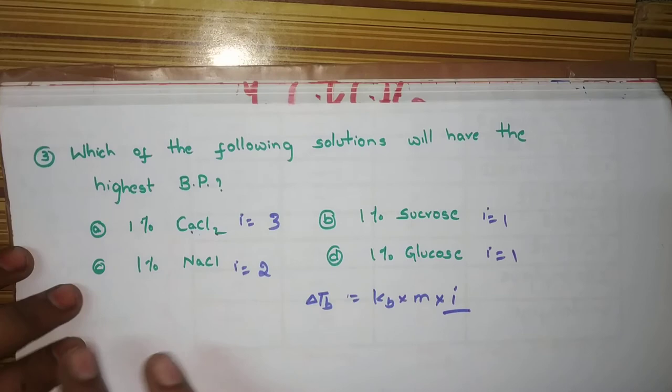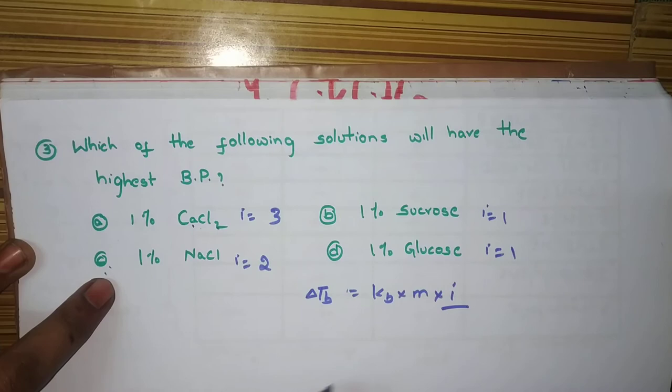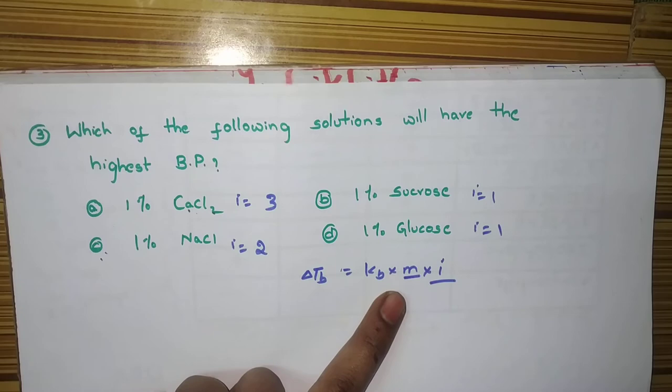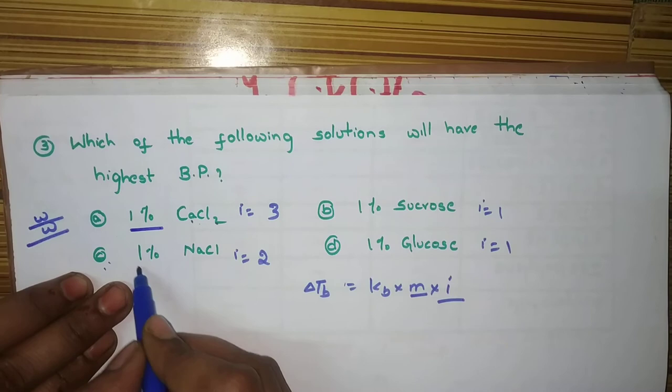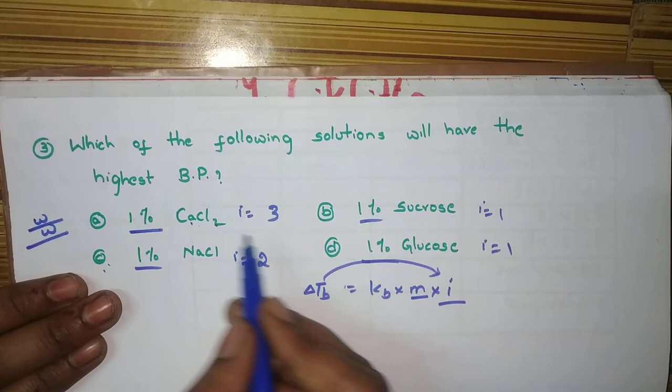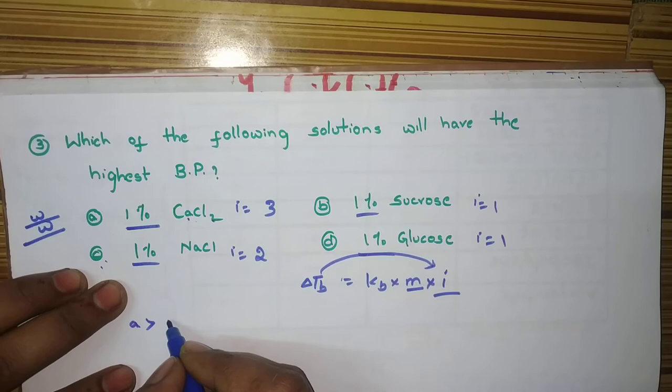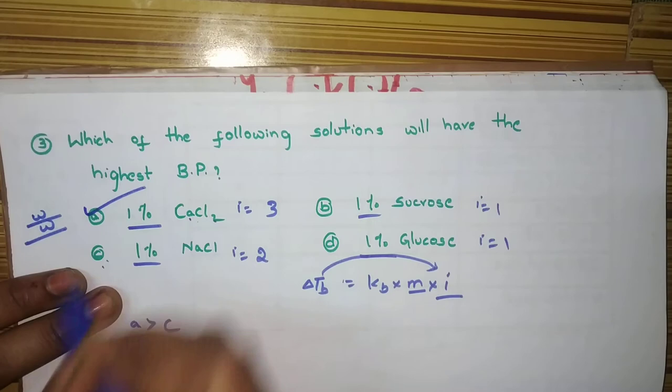And, you also need to check. What is this 1%, 1%, 1%, 1%. Maybe, it is, this is molality, right? Molality means number of moles dissolved in 1 kg of solvent. So, it may be, I think so weight by weight. So, here, whatever, this is also equal, right? So, it will always depend upon i. So, which of the following as high value? A is greater than C. Here, they asked, which of the following has? So, this is the correct option.